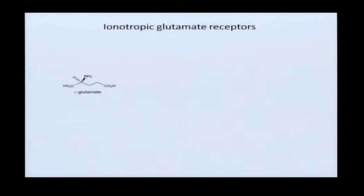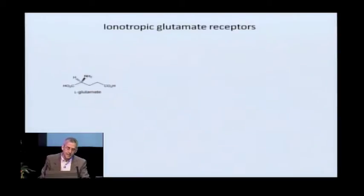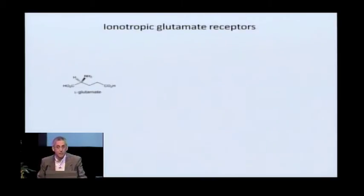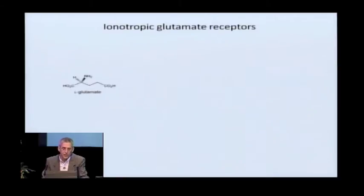Ionotropic glutamate receptors are the receptors in our synapses that mediate most of the fast excitatory neurotransmission in our brain. Despite the fact that the initial notion that glutamate was a neurotransmitter cropped up in the 1950s, it took quite a long time for it to be well-established that glutamate was in fact the primary neurotransmitter. It really wasn't until the 1980s that it was well-defined as the primary neurotransmitter.